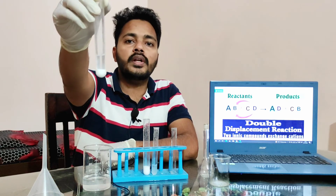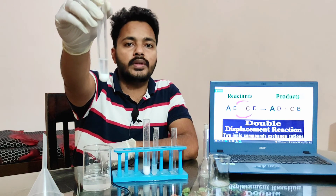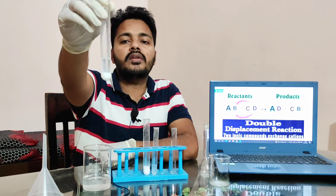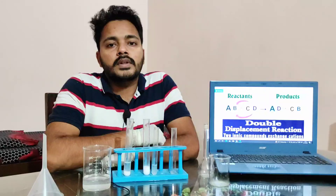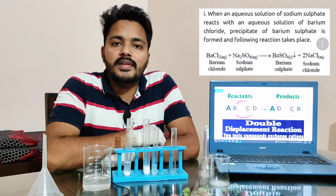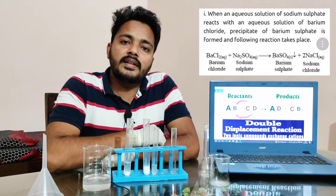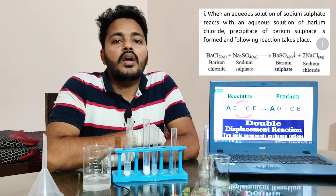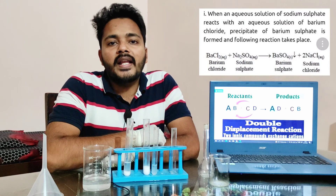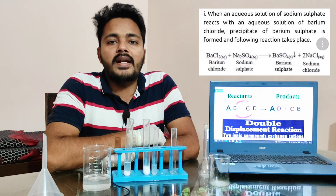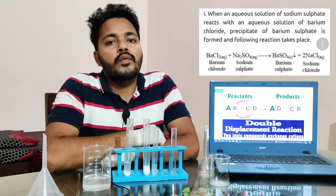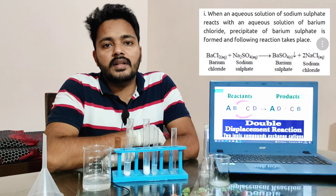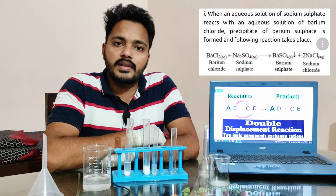In the upper layer, sodium chloride solution is present. In the lower layer, white precipitation of barium sulfate is present. Now for the conclusion and result: when you combine barium chloride solution and sodium sulfate solution, you will get white precipitation of barium sulfate and sodium chloride solution.